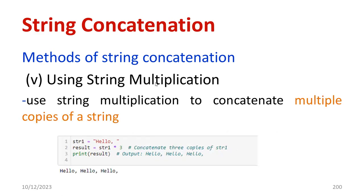You can also perform string multiplication using the star operator. For example, str1 is 'hello'. If your expectation is to repeat str1 three times, you use the star operator. If you use the star operation and then print, you are able to get 'hello' three times as output. This is called string multiplication.